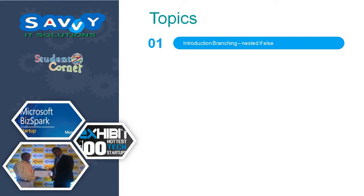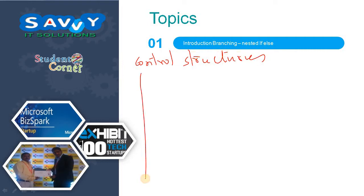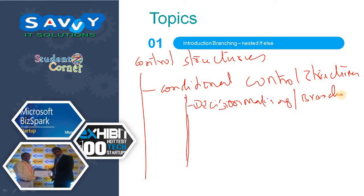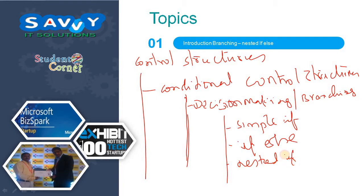So here I need to mention very clearly that control structures — conditional control structures — under these we have decision making or branching. Under these we have simple if, if-else, nested if-else, and else-if. Now we are discussing about nested if-else.